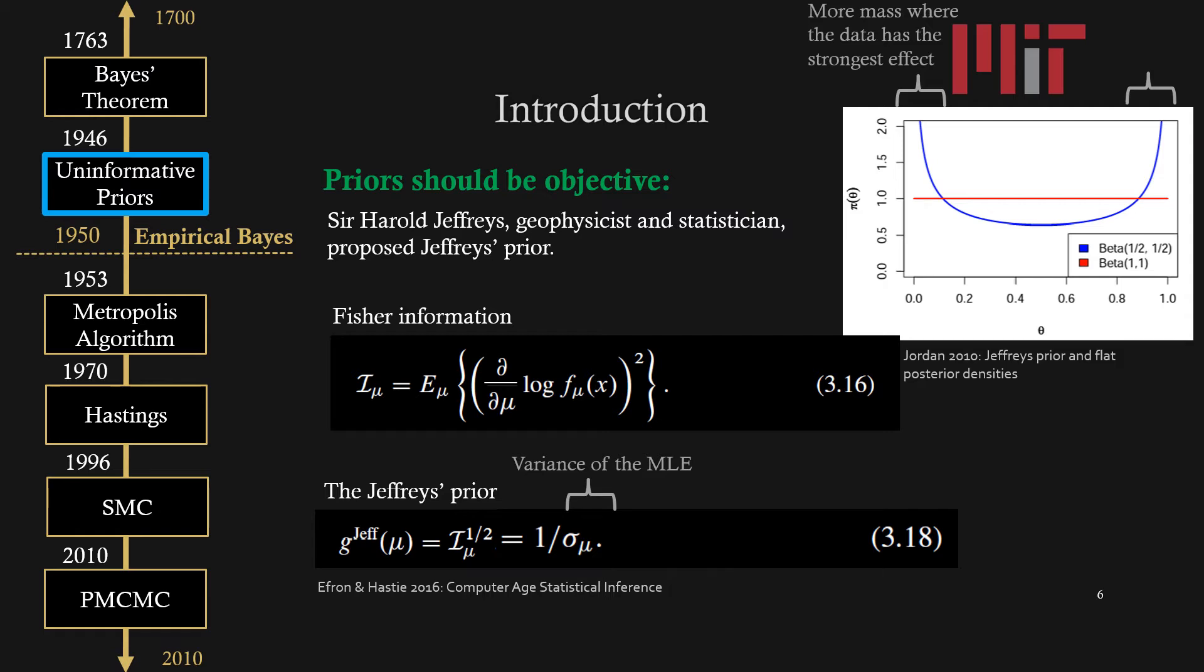In 1946, Sir Harold Jeffreys believed that he had the answer. A geophysicist and statistician himself, he believed that priors should be objective and his method of making an objective prior was to use the Fisher information shown in equation 3.16, taking the square root of the Fisher information, or also equivalent to one over the variance of the maximum likelihood estimator.